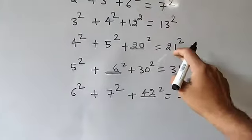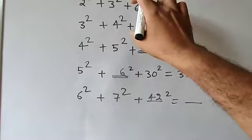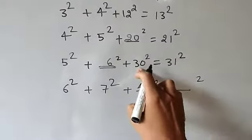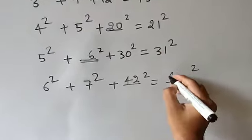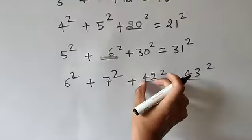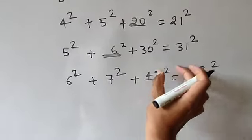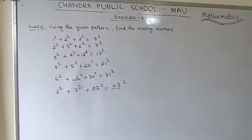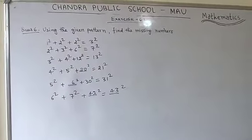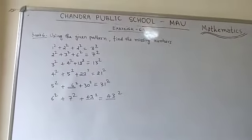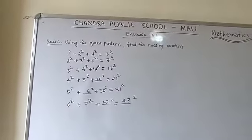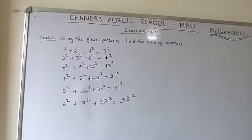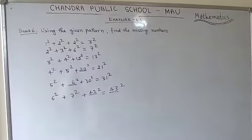Now for the last column: 3, 7, 13, 21 — these are each one more than the third column values: 2+1=3, 6+1=7, 12+1=13, 20+1=21, 30+1=31, 42+1=43. For pattern questions, go through the given numbers and identify whether the pattern is increasing, decreasing, or otherwise.